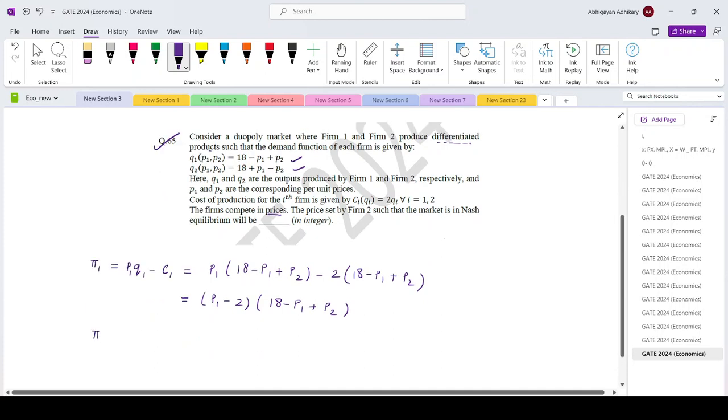And the profit expression for firm 2 will be price set by firm 2 into quantity minus C2. So that is P2 into 18 plus P1 minus P2, minus 2 into 18 plus P1 minus P2.